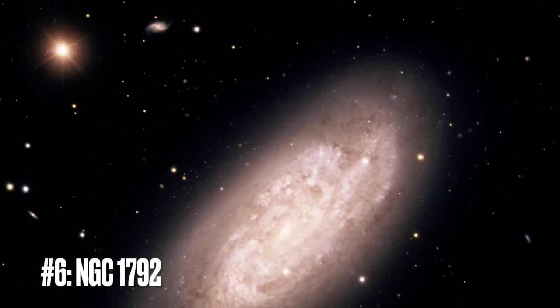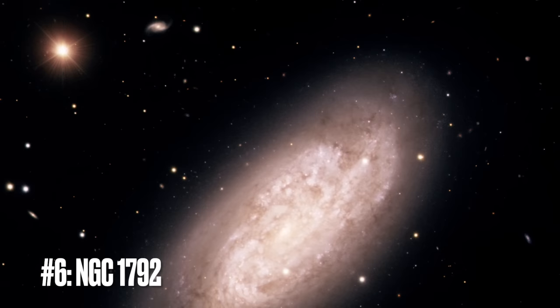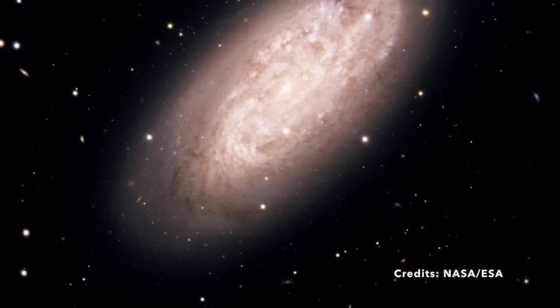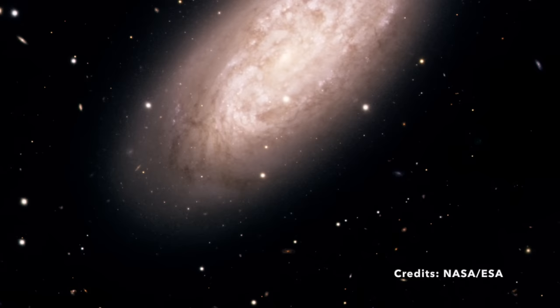Image number six: journey into the chaotic beauty of NGC 1792. Have you ever gazed upon a scene that seemed a bit messy, but in the most captivating way? That's the allure of NGC 1792, a spiral galaxy that dances about 50 million light-years away from us in the Columba constellation.